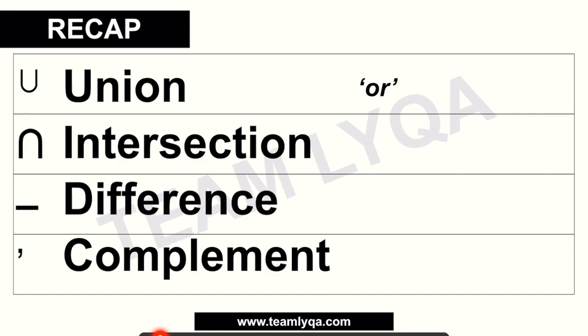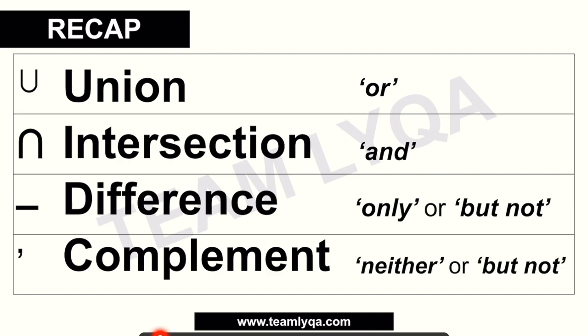Here are the keyword clues: For union, the magic word is 'or.' For intersection, it's 'and' or 'both' — or 'all three/four' when dealing with more sets. For difference, look for 'only' — like 'only dogs' or 'only cats' — or phrases like 'cats but not dogs.' For complement, watch for 'neither' or 'but not,' meaning outside all mentioned sets.